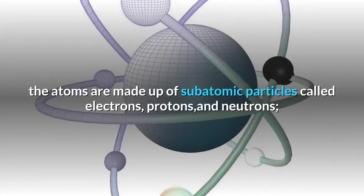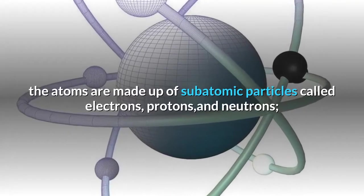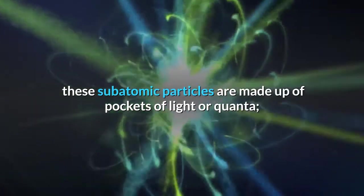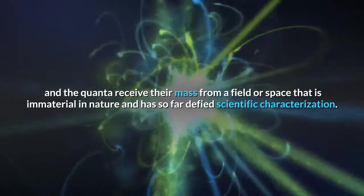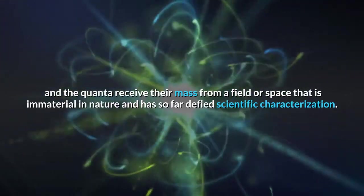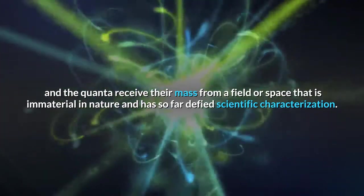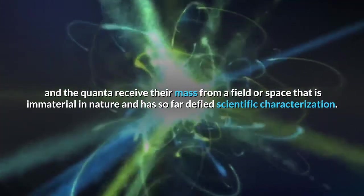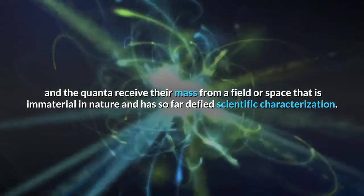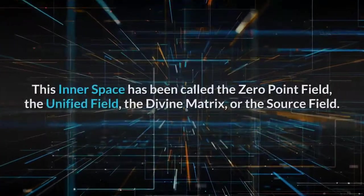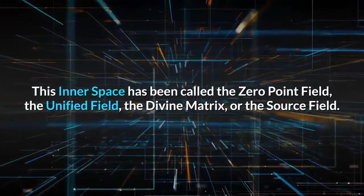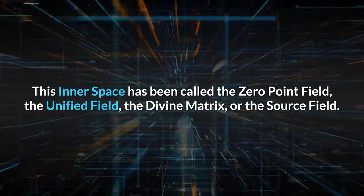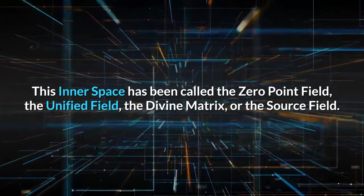The molecules are made up of atoms. The atoms are made up of subatomic particles called electrons, protons and neutrons. These subatomic particles are made up of pockets of light or quanta and the quanta receive their mass from a field or space that is immaterial in nature and has so far defied scientific characterization. This inner space has been called the zero point field, the unified field, the divine matrix or the source field.